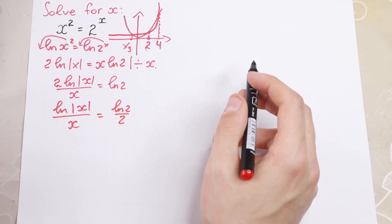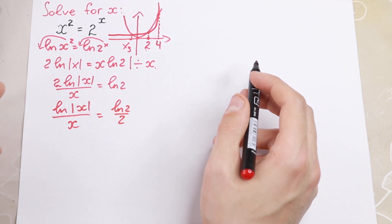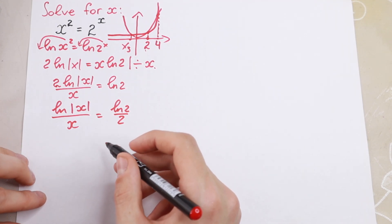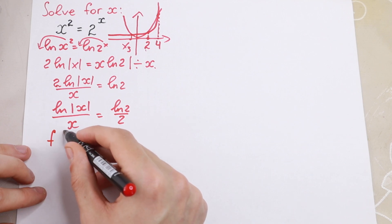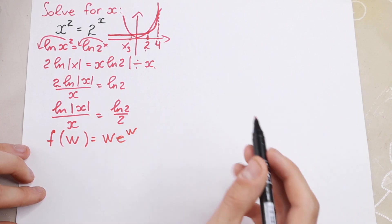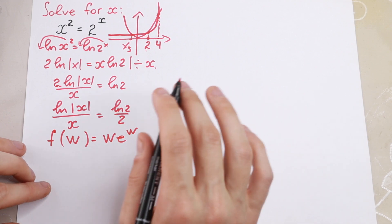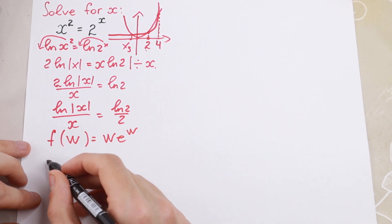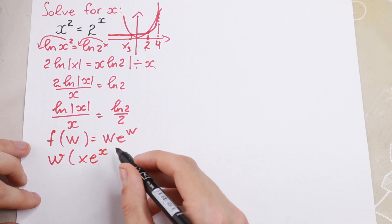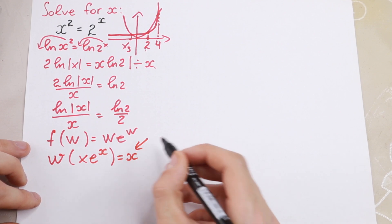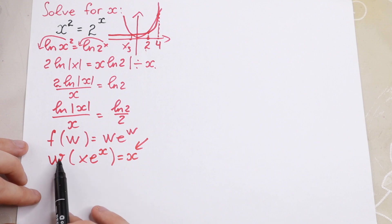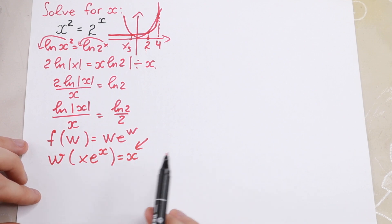I mentioned the Lambert W function before. This is a multivalued function where W is any complex number and e to the power W is the exponential function. The function satisfies: W(W·e^W) = W. In simple terms, if we apply the Lambert W function to the expression x·e^x, it will be equal to x. So W(x·e^x) = x — that's all about the Lambert W function.